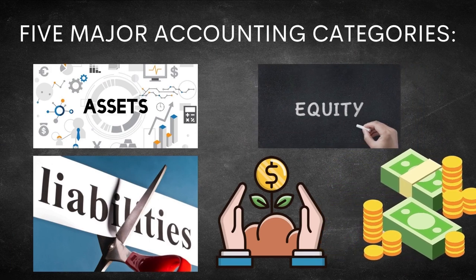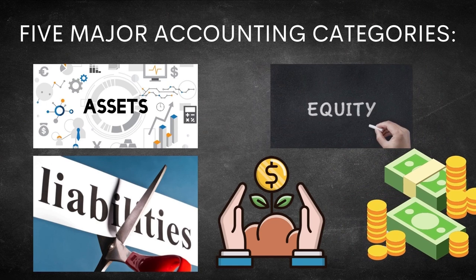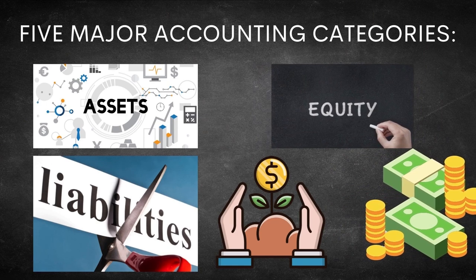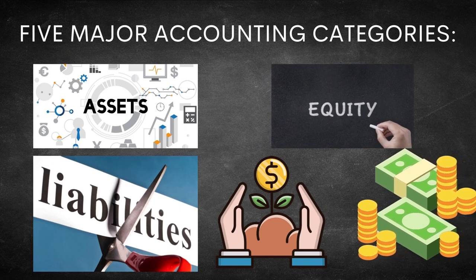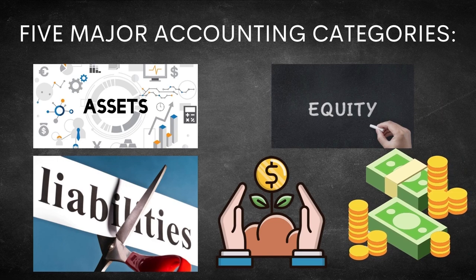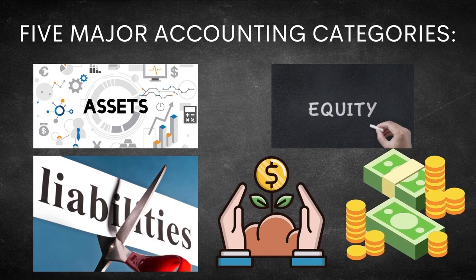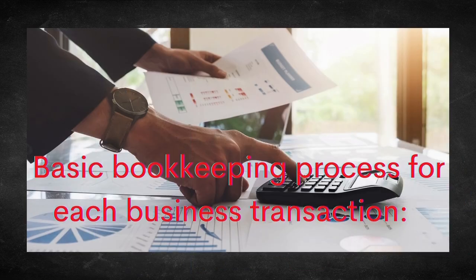These are the five major accounting categories. The first one is assets, followed by liabilities, owner's equity, revenue, and expense.